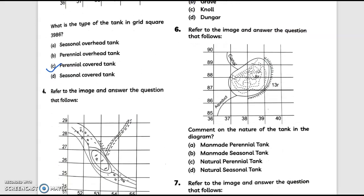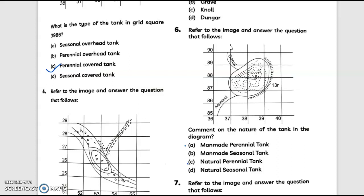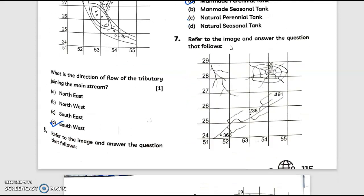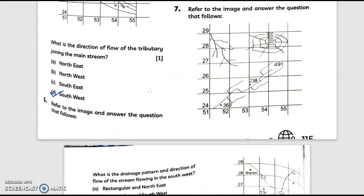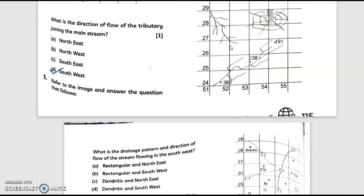Moving to question number six: comment on the nature of the tank in the diagram. Answer is man-made perennial tank. Question number seven: refer to the image and answer the question that follows. What is the drainage pattern and direction of flow of the stream flowing in the southwest? These are the options. Answer is rectangular and northeast, option A.